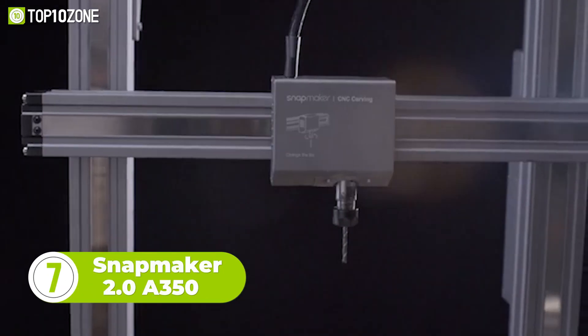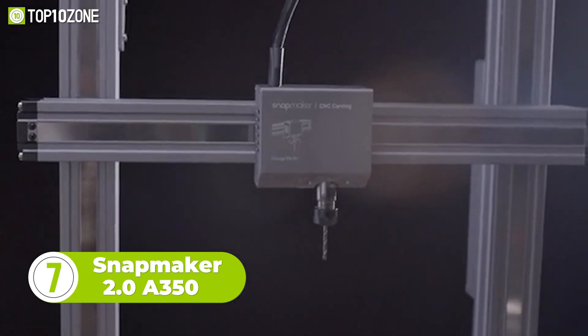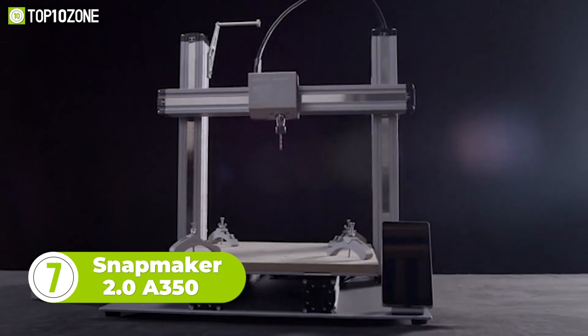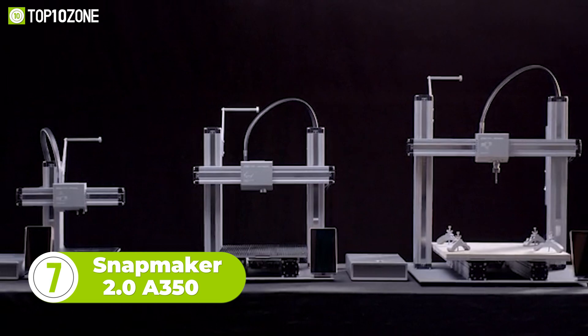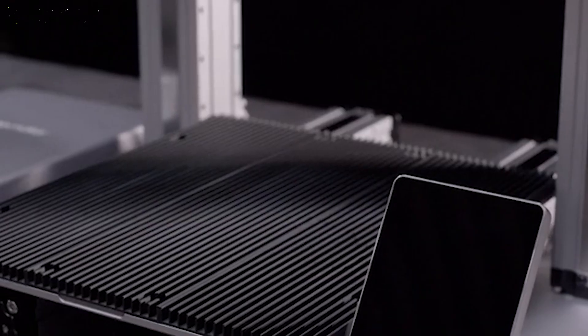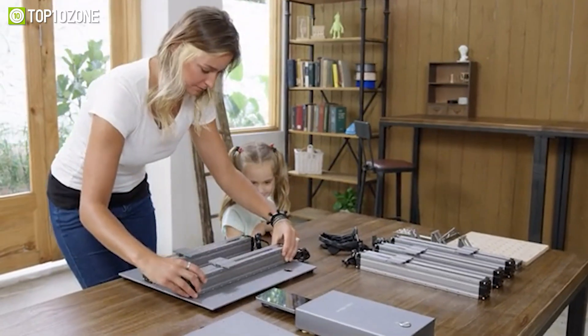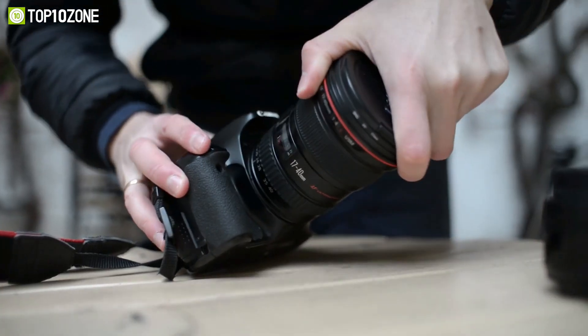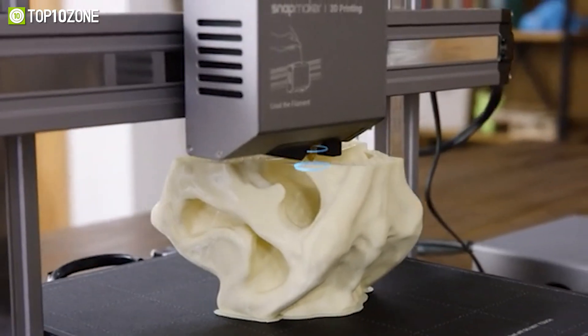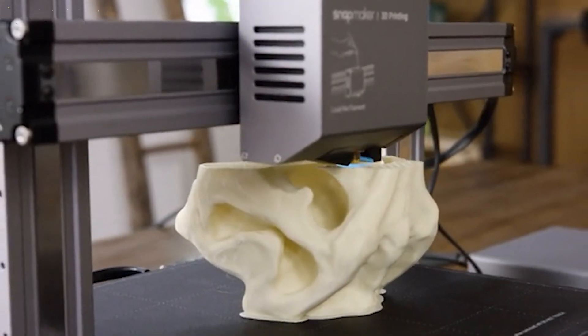From 3D printing to laser engraving, the Snapmaker 2.0 A350 is a modular 3-in-1 3D printer that will unlock your creative potential. Snapmaker has a modular design so its functionality can be changed quickly, just like changing lenses on a camera. It has a faster working speed and a much larger workspace than the previous model.